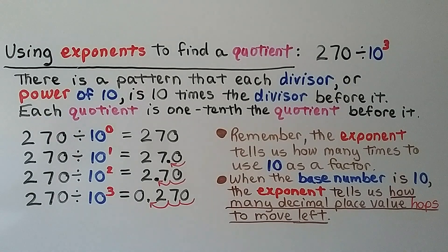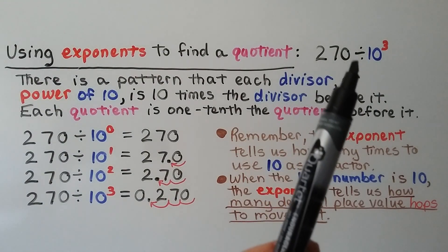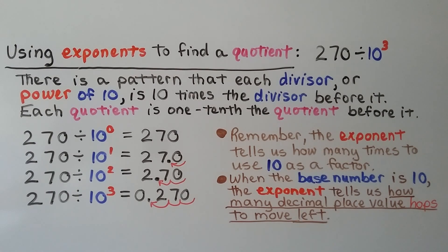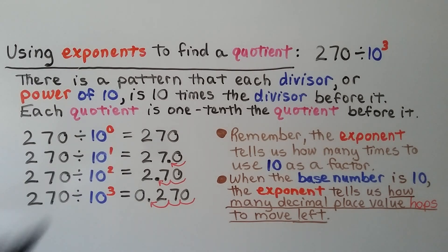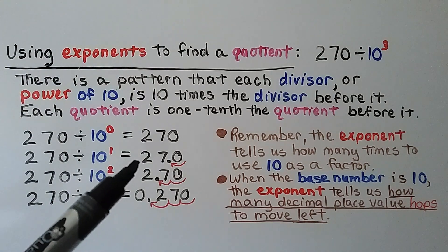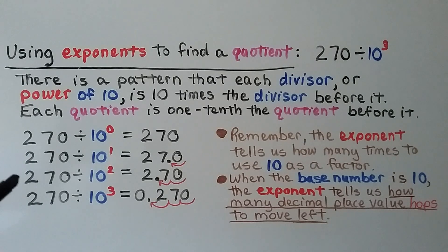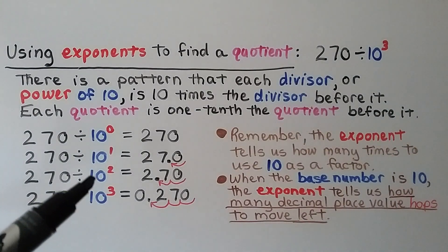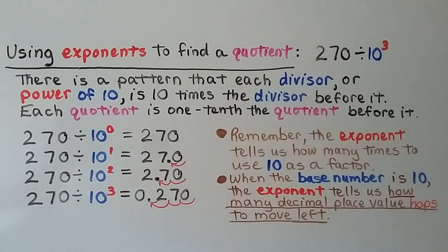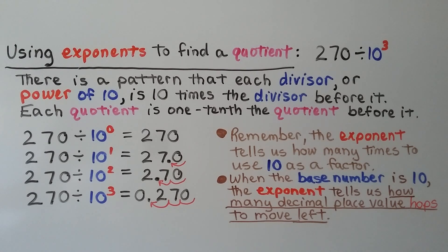This is what happens when we use exponents to find a quotient. We have 270 divided by 10 to the third power, which is the same as 270 divided by 1,000. Each divisor or power of 10 is 10 times the previous divisor, and each quotient is one-tenth the quotient before it. 270 divided by 10 to the zero power equals 270. 270 divided by 10 to the first power equals 27 and 0 tenths. 270 divided by 10 to the second power — that's 100 — equals 2 and 70 hundredths. 270 divided by 10 to the third power equals 270 thousandths.